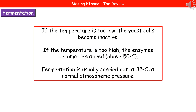When carrying out a fermentation reaction, because it uses yeast, which are living organisms, we need to be mindful about the temperatures we're using. If the temperature is too low, the yeast cells will become inactive and fermentation will happen at a very low rate, if at all. If the temperature is too high, the enzymes within our yeast will become denatured, which usually occurs above 50 degrees Celsius. If the enzymes are denatured, glucose as a substrate will no longer fit the active site and the process can't occur. To ensure the optimum rate of fermentation, we carry it out at 35 degrees Celsius and normal atmospheric pressure.